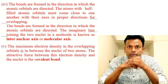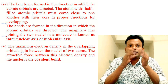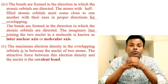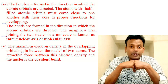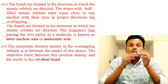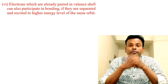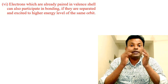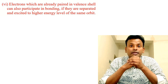Point five: the maximum electron density in the overlapping orbitals is in between the nuclei of two atoms. The attractive force between this electron density and the nuclei is the covalent bond. Point six: electrons which are already paired in the valence shell can also participate in bonding if they are separated and excited to a higher energy level of the same orbit.